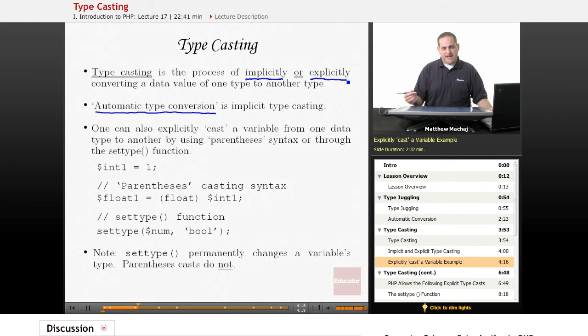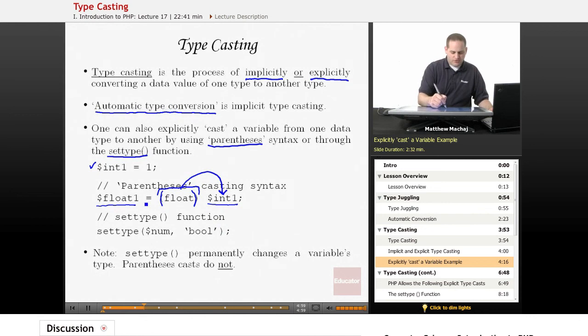There are two ways to explicitly cast a variable from one data type to another. You can use parentheses syntax, which we're going to talk about in a second, or the settype function. So for example, if we have a variable here, $int1, that's set equal to the integer value 1, and we want to make that a float variable. What you can do is we can create a new variable called $float1, and what we do is we set it equal to the integer variable name, and then what we do is we have parentheses with the word float in between them. What that means is this parentheses segment right here says take the value of $int1, convert it to a float, and then assign it to $float1.